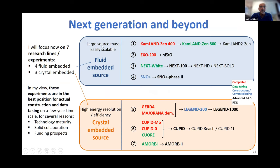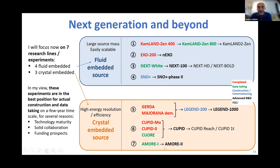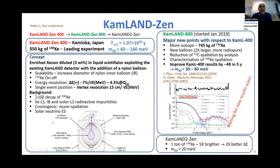Now I will review next-generation experiments. I will focus on seven research lines: four fluid-embedded — KamLAND-Zen, EXO/nEXO, NEXT, and SNO+ lines — and three crystal-embedded — LEGEND, CUPID, and AMoRE. These experiments are in the best position for construction and data taking on a few-year timescale given technology maturity, collaboration strength, and funding prospects. Starting with KamLAND-Zen: KamLAND-Zen 400, now concluded, is the leading experiment in terms of m_ββ constraint at 160 meV.